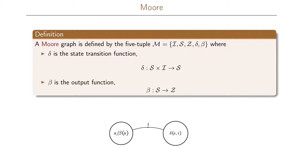The Moore graph on the other hand is a little bit different. A Moore graph is also defined by the five-tuple I, S, Z, delta, and here we have the output function that we call beta. Delta is the state transition function, so it takes as input the state and the input to our system and produces a new state. Beta, the output function, takes as input a state and from this state produces an output.